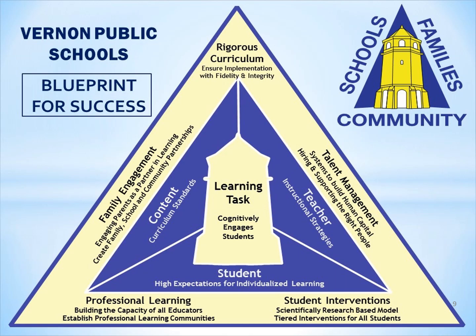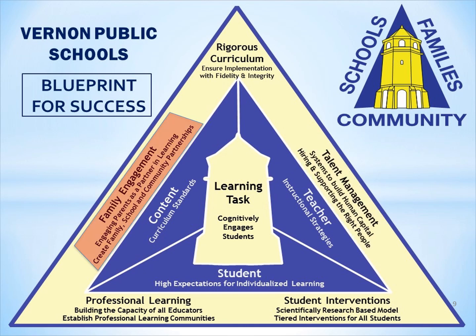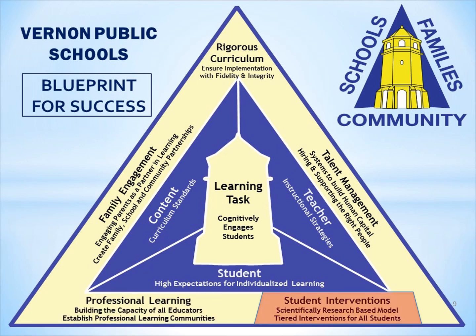While some schools are nearing the expectation of 100%, the vast majority of schools and the state as a whole have a lot of work ahead. There are no shortcuts to improving academic growth. Vernon Public Schools' Blueprint for Success provides a nice model for an integrated approach that highlights five improvement drivers: rigorous curriculum implemented with fidelity and integrity; talent management designed to build and nurture staff capacity; family engagement that engages parents as partners in learning; professional learning that builds coherence and capacity; and student interventions to bring research-based, tiered interventions and supports to students based on their needs.